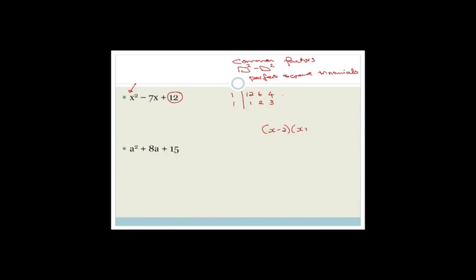Let me show you an example. If we have (x − 2)(x + 3), using FOIL: x times x is x², x times 3 is 3x, −2 times x is −2x, and −2 times 3 is −6. So we get x² + x − 6. You can see that −2 times 3 gives −6, and 3x − 2x gives us the middle term. So we're looking for numbers that multiply to 12 and add or subtract to give us −7.